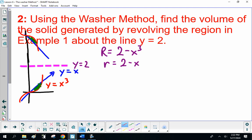Yeah, right. Volume is π times the integral from 0 to 1 of [(2 - x³)² - (2 - x)²]. Oh, I'm using square brackets, sorry. dx. All right.